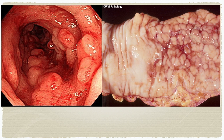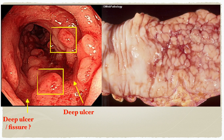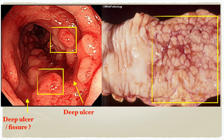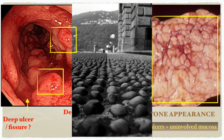This colonoscopy image shows abnormal findings in the bowel mucosa. The mucosa is irregular with presence of deep ulcers and fissures in between the raised mucosa — this is known as cobblestone appearance. This appearance results from healing deep longitudinal ulcers that alternate with uninvolved or non-ulcerated mucosa. For those who cannot imagine what cobblestone looks like, it is a rounded stone previously used as pavement. Whenever you see this appearance, think of Crohn's disease.